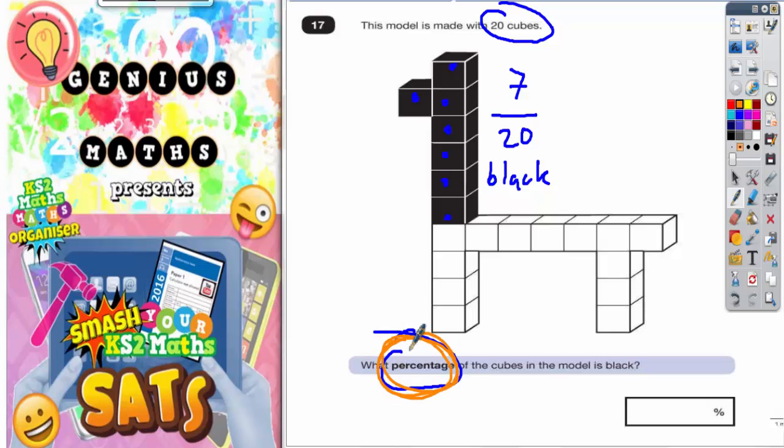Well, percentage is out of 100, so what we've got to do is make this 7 out of 20 into an equivalent fraction out of 100, because percentage is out of 100.